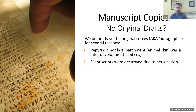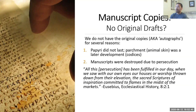The second reason the originals may not exist is persecution. The church faced heavy persecution in many different ways. The church historian Eusebius, a fourth-century figure, recorded that many scriptures were actually burned during the time of Diocletian's persecution. He says: 'We saw with our own eyes our houses of worship thrown down, the sacred scriptures of inspiration committed to flames in the midst of the markets.'